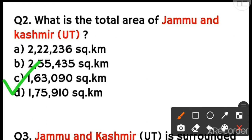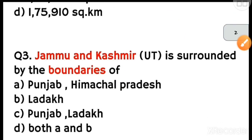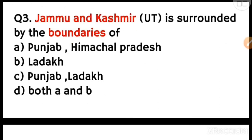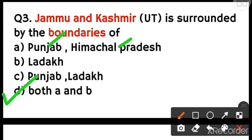Moving to the next question: Jammu and Kashmir UT is surrounded by which boundaries within India? Option A is Punjab and Himachal Pradesh, B is Ladakh, C is Punjab and Ladakh, and D is both A and B. Since Ladakh has become a separate UT, Jammu and Kashmir now shares boundaries with Punjab, Himachal Pradesh, and Ladakh. So option D — both A and B — is the correct answer.